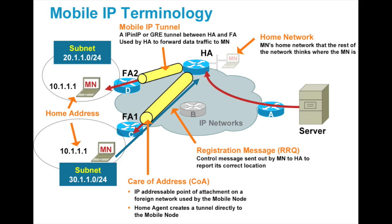When the mobile node travels outside the original network, the delivery of data to the mobile node is taken care of by the foreign agent. The home agent delivers the packet to the current care-of address. During this process, the packet's header is modified so that the destination IP address is changed from the original IP address to the care-of address. The newly created header encapsulates the original packet, routing it until it arrives at the care-of address. This technique is called tunneling, and it allows the packet to bypass the usual effects of IP routing.